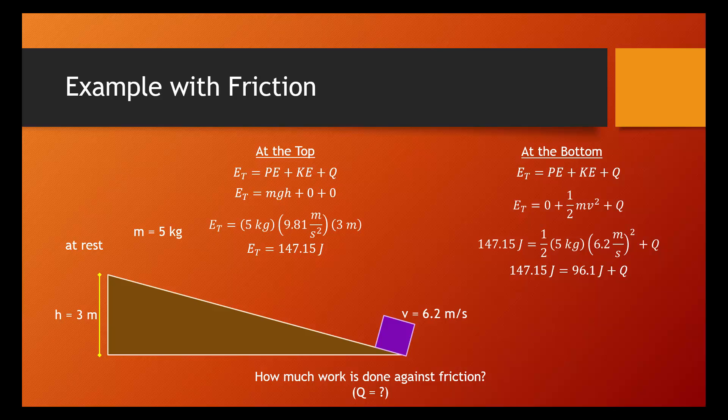So this object started out with a little more than 147 joules of potential energy, but now at the bottom, it only has about 96 joules of kinetic energy. If we didn't know any better, it would seem as if some energy had been lost. But we know that friction produces heat, and so we can figure out that this process produced 51 joules of internal energy. This is the work done against friction. This is the amount of energy turned into heat during the process.